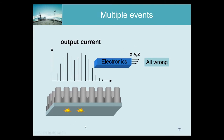If two events enter simultaneously — within one scintillation duration — everything is wrong. The X and Y computed would be the center of mass of the combined flash, landing somewhere in between and therefore incorrect. The total output would report double the energy: instead of 140 keV it would show 280 keV. However, we can detect this from the energy reading and reject the event. A slow scintillator makes the 'simultaneous' window wider than a fast scintillator.